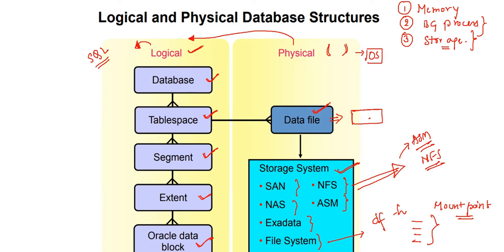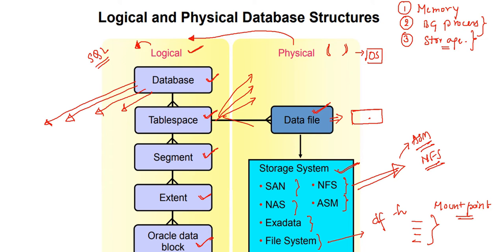At the top of the hierarchy we have the database, and under one database you can create multiple tablespaces. Under one tablespace you can create multiple data files. After the data file there is one more logical entity called segments, and under one data file you can have multiple segments.